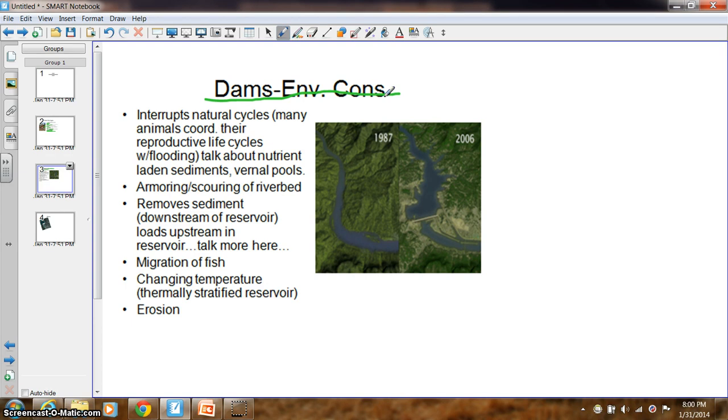So let's look at the cons. One of the biggest things that's totally obvious is the fact that it disrupts or interrupts natural cycles. Here is a picture of a dam. In 1987, this was the flow of this river. When a river flows, it meanders, it has turns in it. The more meanders or turns you have in a river, generally speaking the older the river is, meaning it's had time to carve out the landscape.